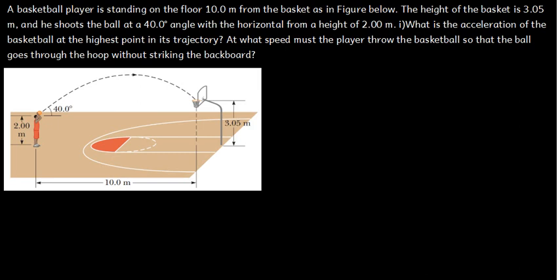Part 1: What is the acceleration of the basketball at the highest point of its trajectory? Part 2: At what speed must the player throw the basketball so that the ball goes through the hoop without striking the backboard?